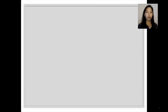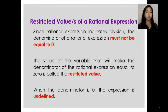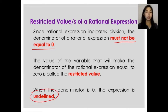Now that you know how to identify if a certain expression is a rational expression or not, it's time to learn about the restricted values of rational expressions. Since a rational expression indicates division, you have to remember that the denominator must not be equal to zero. Because if the denominator is equal to zero, the expression would be considered as undefined. The value that will make the denominator of the rational expression equal to zero is what you call a restricted value.